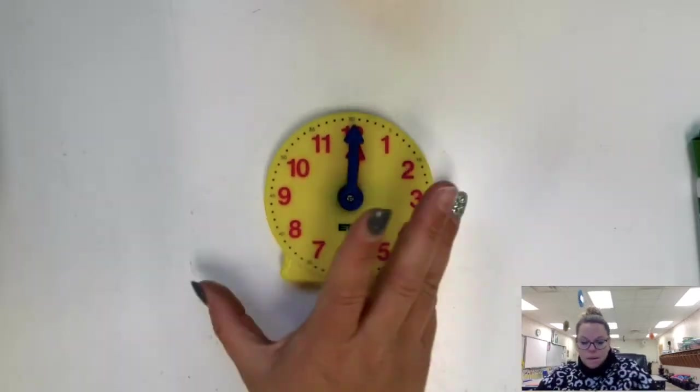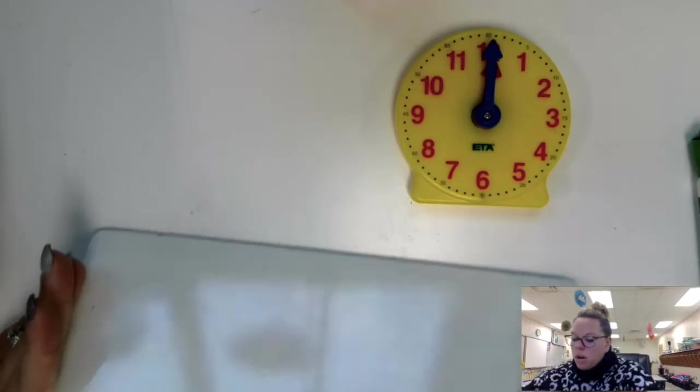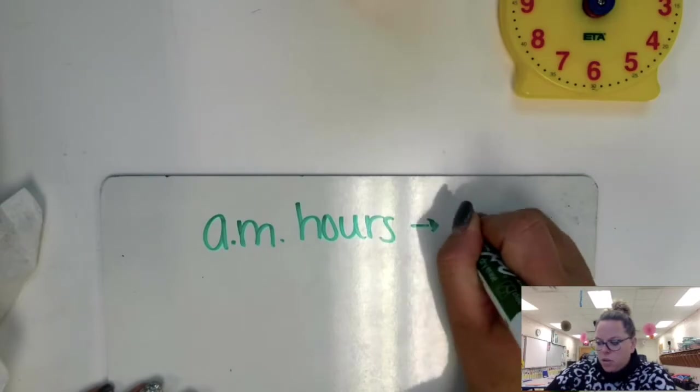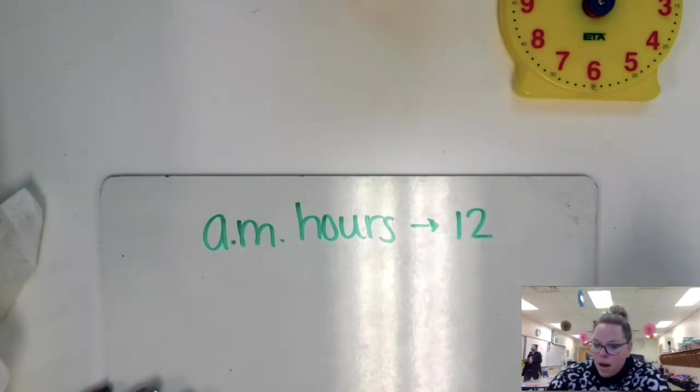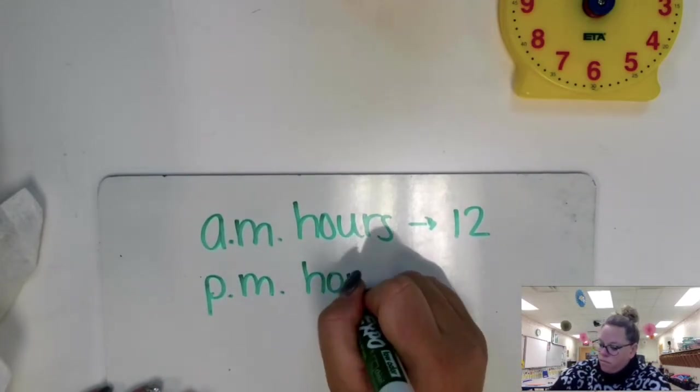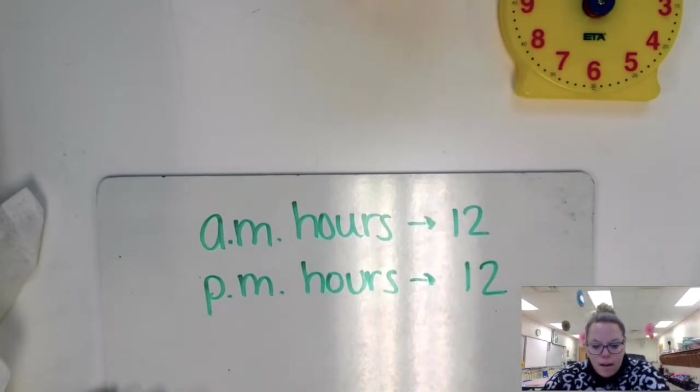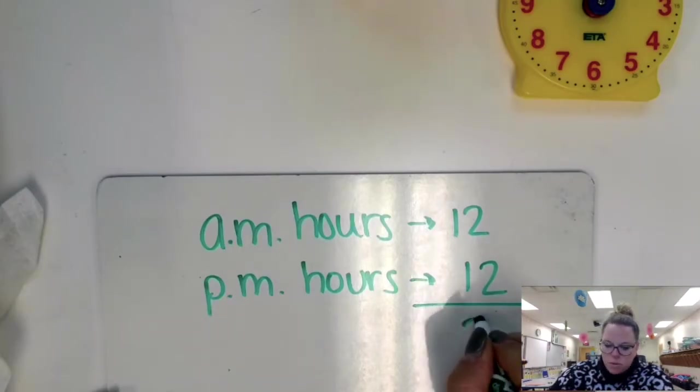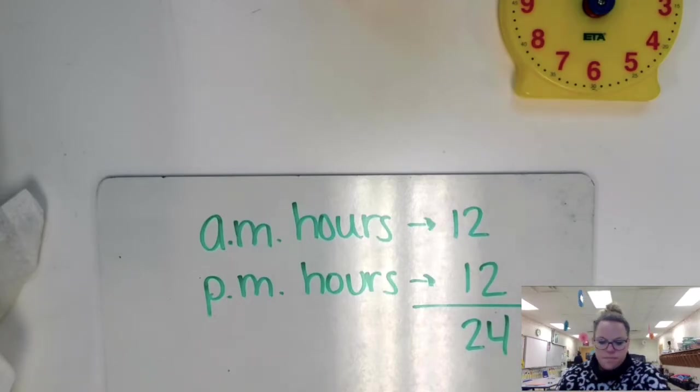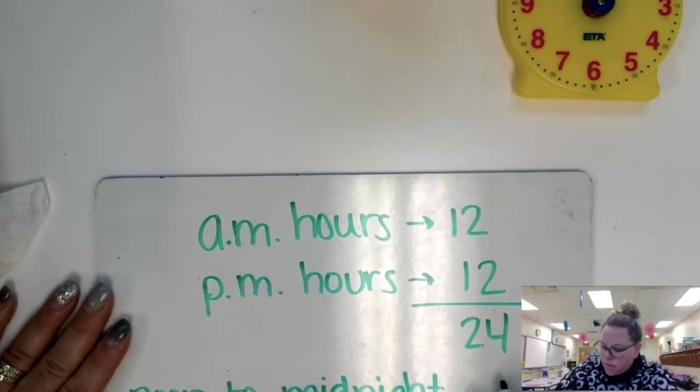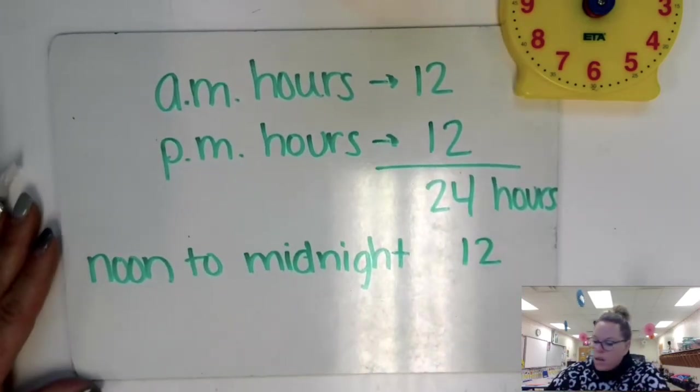Now, something important to remember, and if this is something that you struggle with, write this down somewhere. Check if it's in your red folder. If it's not, maybe make a note for in your red folder. How many a.m. hours are there? A.m. hours? There are 12. How many p.m. hours are there? There are 12. So if you have 12 a.m. hours and 12 p.m. hours, that gives you a total of 24 hours. So from noon to midnight, there are 12 hours.